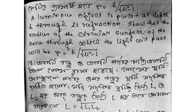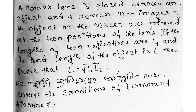The formula is: root over (mu squared minus 1) is equal to root over (L1 into L2). A convex lens is placed between an object and a screen. Two images of the object on the screen are formed at two positions of the lens. If the lengths of the two images are L1 and L2, prove that L is equal to root over (L1 into L2).